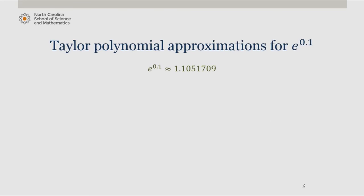Well e to the 0.1 is approximately 1.1051709. The first degree Taylor polynomial for e to the x about x equals 0 evaluated at 0.1 gives us 1.1.